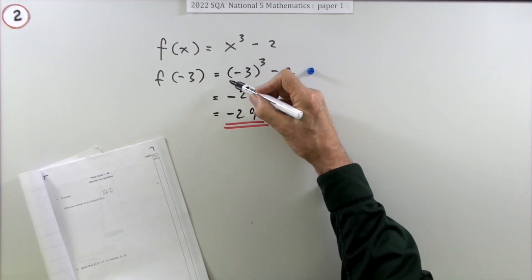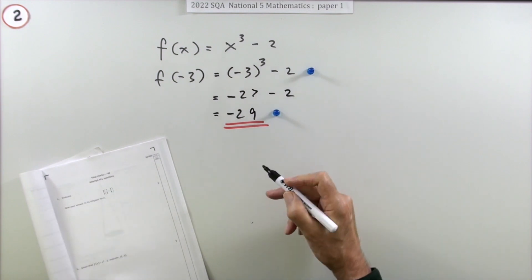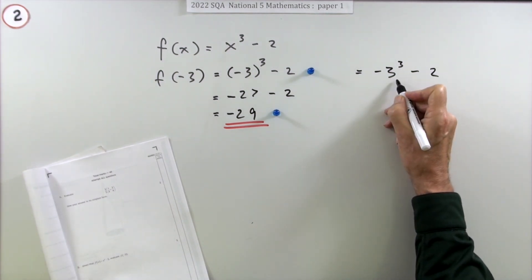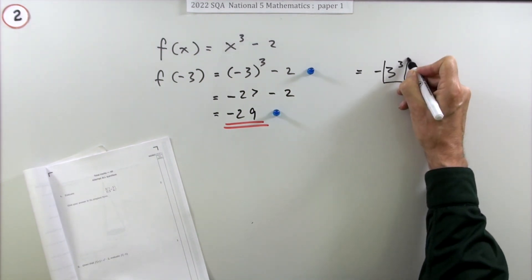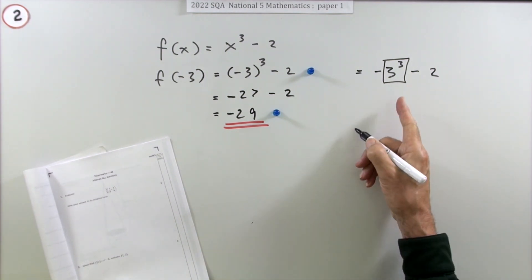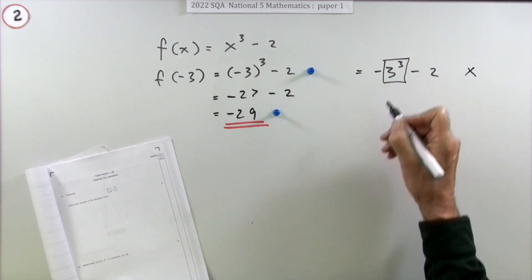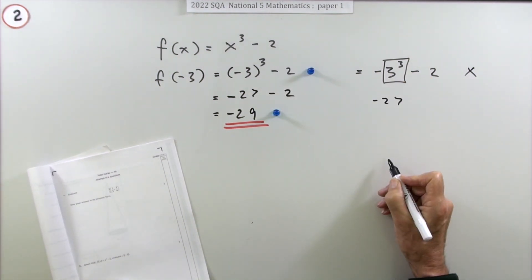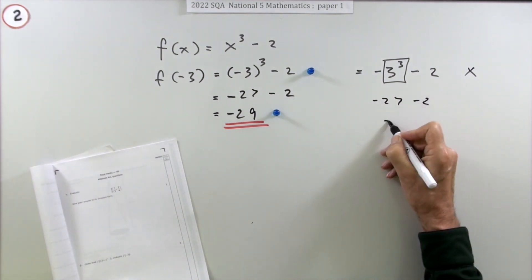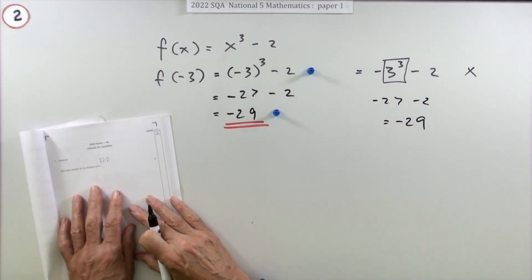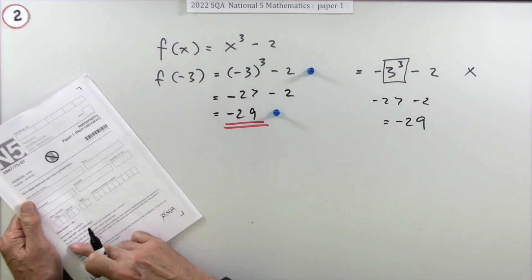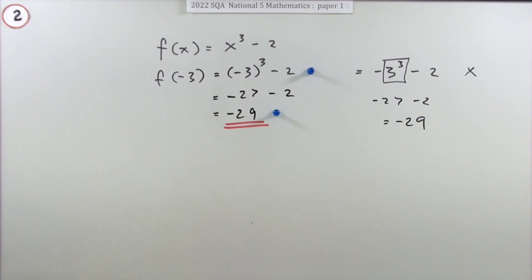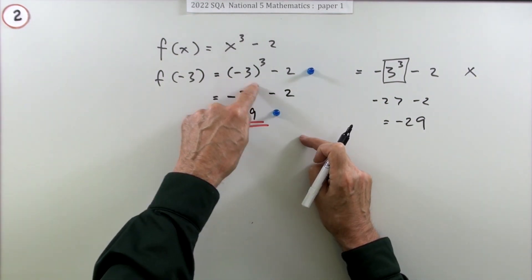Now that should really be placed inside of a bracket because when you cube it, you have to cube the negative as well as the three. If you were to write negative three cubed take away two, that would be wrong, that wouldn't get a mark, because all you're saying there is you're ignoring the negative sign and just carrying out whatever the operation was on the three. However, if you did do that, which is wrong, you would still get the correct answer just by coincidence here, because it turns out that that cubed is just negative 27, which means doing it the wrong way would result eventually in the correct answer.